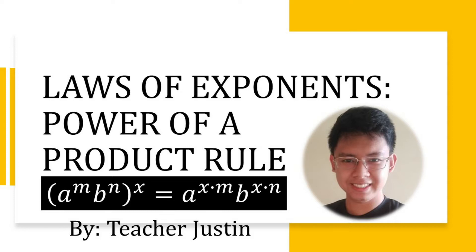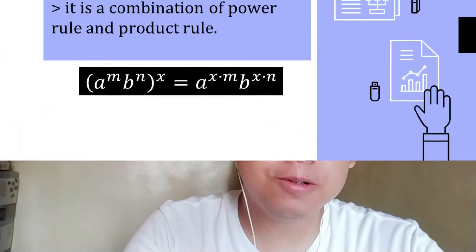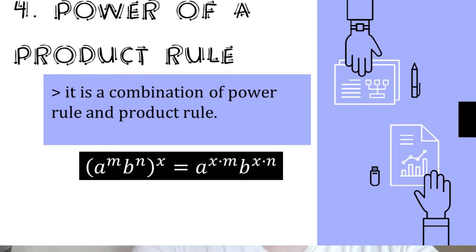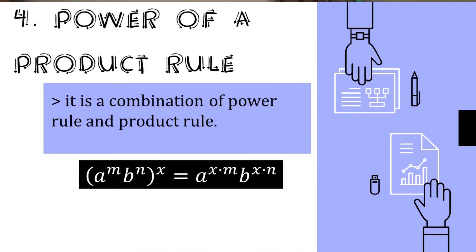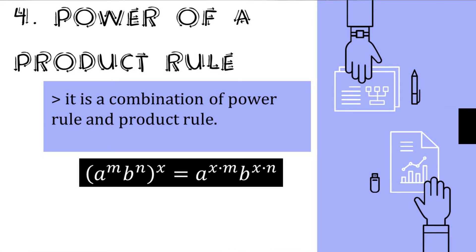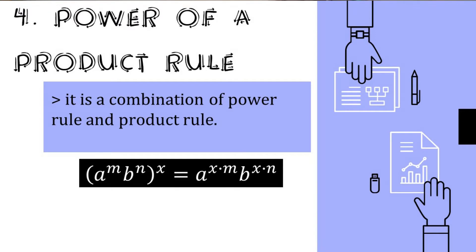Hey everyone, welcome to MathLet. Teacher Justin here. Today's topic is the Laws of Exponents: Power of a Product Rule. The Power of a Product Rule is a combination of both the Power Rule and the Product Rule. It involves a group of variables whose operation is multiplication, and that group is raised to an exponent. To simplify, we just distribute the exponent to each variable.